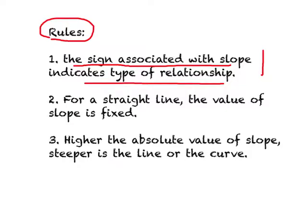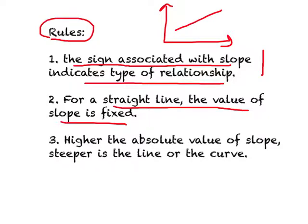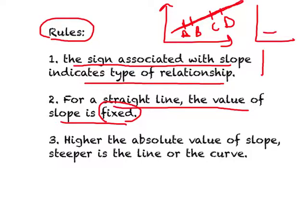Rule two: for a straight line, the value of slope is a fixed number. For example, if you find the slope between points A and B on a line, and then between points C and D on the same line, the value will be the same. Between any two points on a straight line, the slope is constant. On a curve, however, the slope keeps changing — but that's something we'll consider later.